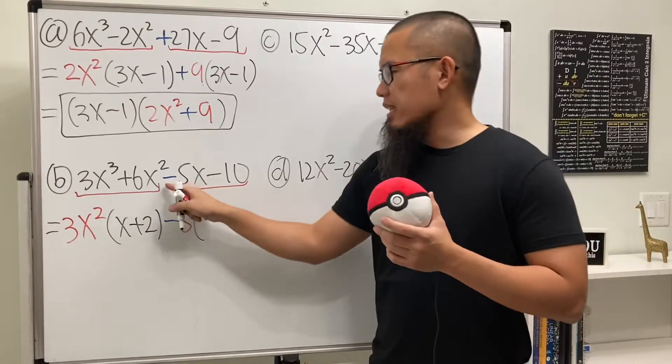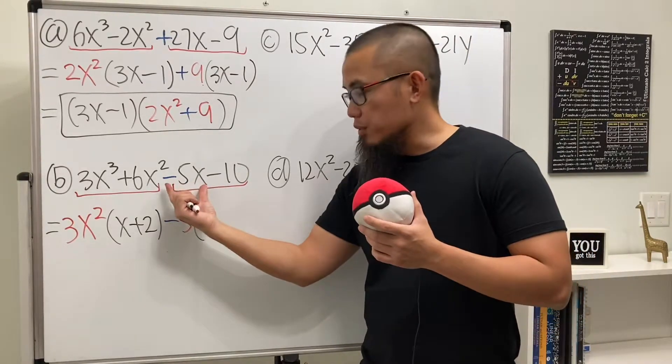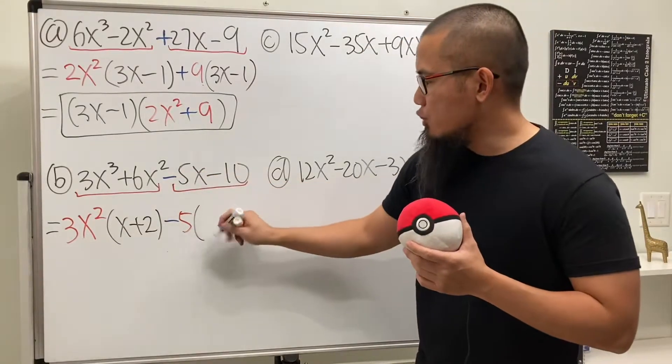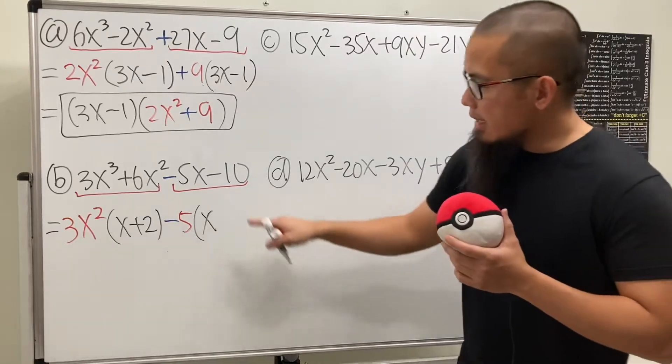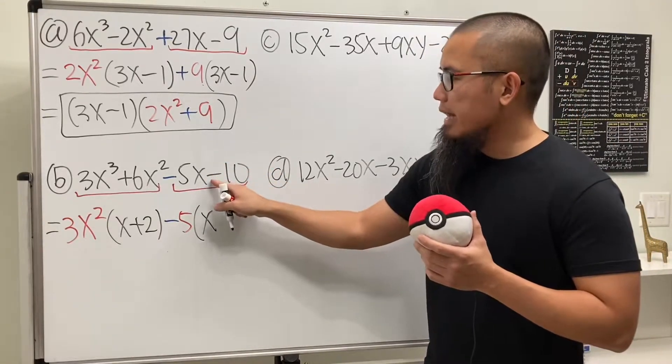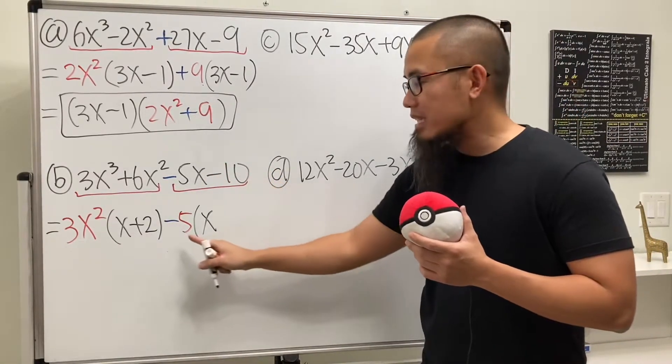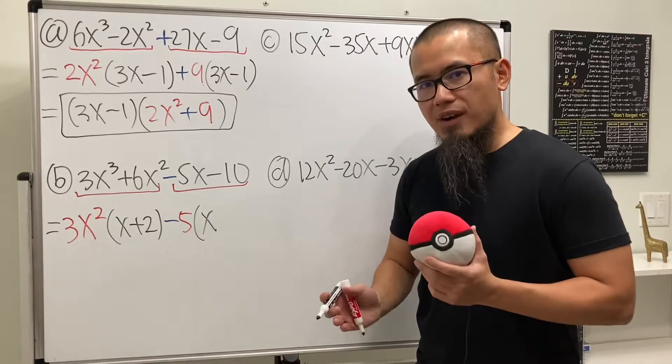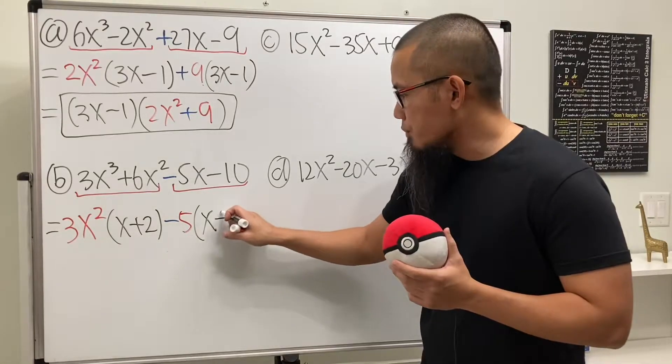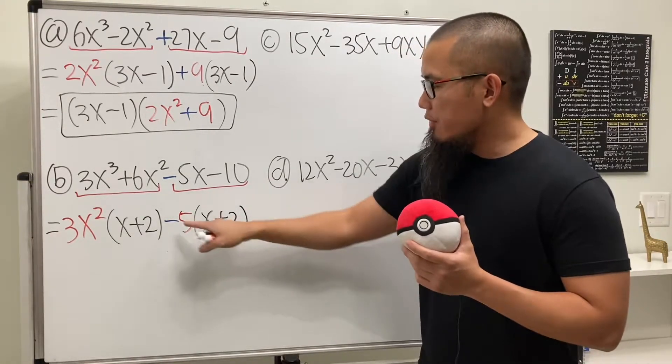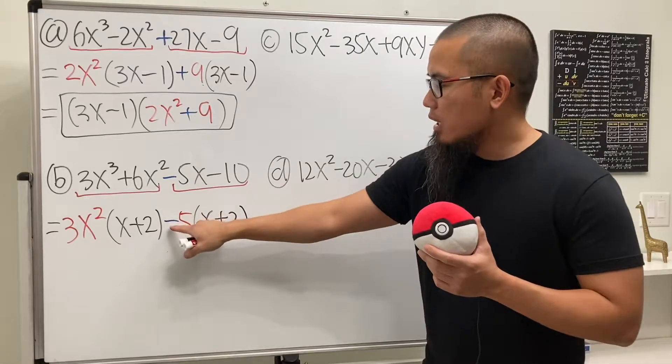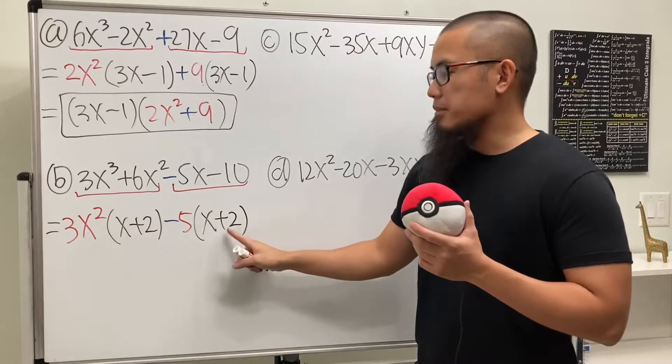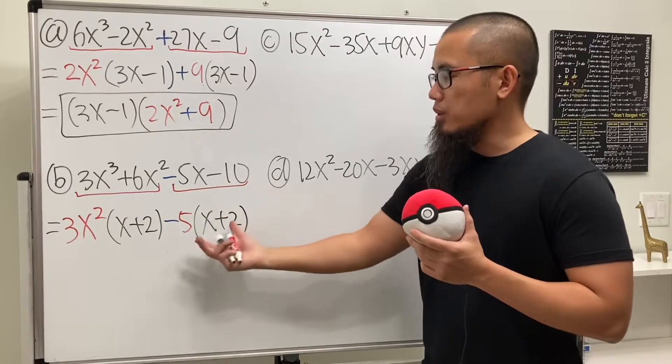And then what we have next is, well, originally this is a negative 5x. But we took out the negative right here already. So this will give us just an x. And then this right here was originally negative 10. But we factor out negative 5. So negative 10 divided by negative 5 should give us plus 2. And if you distribute this backwards, you see negative 5 times x does give us negative 5x. Negative 5 times 2 is negative 10. So we know this is correct.